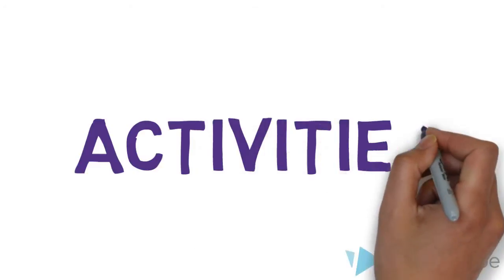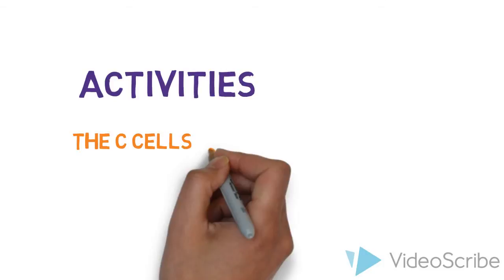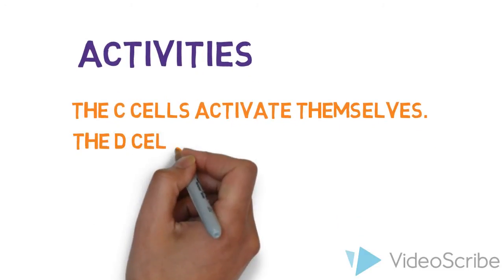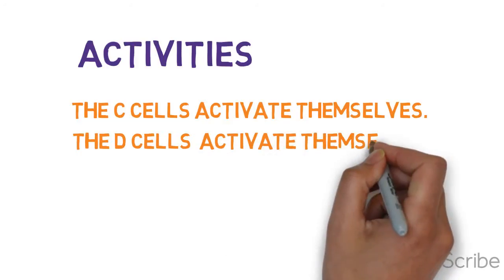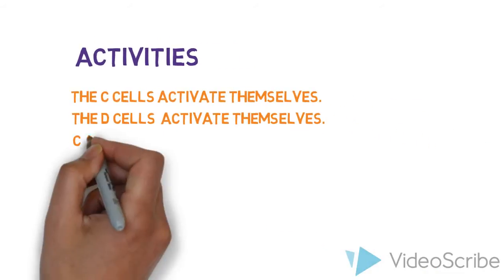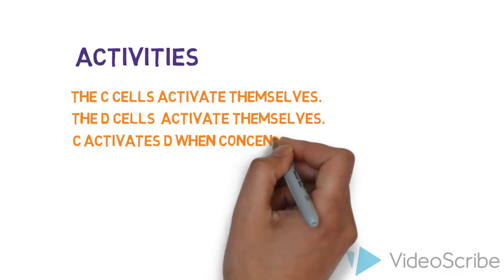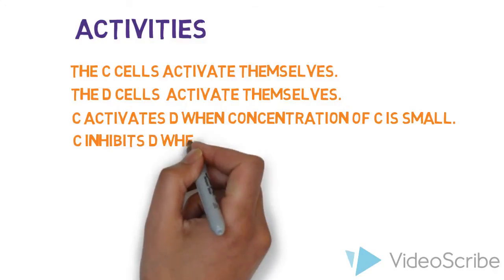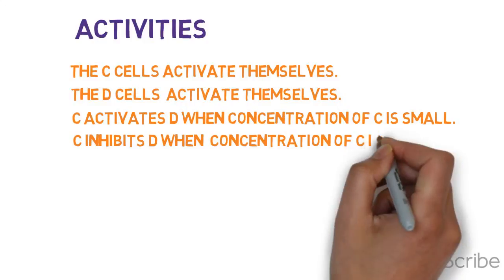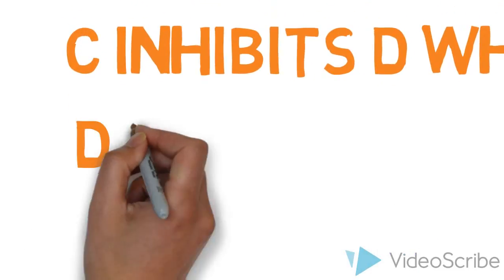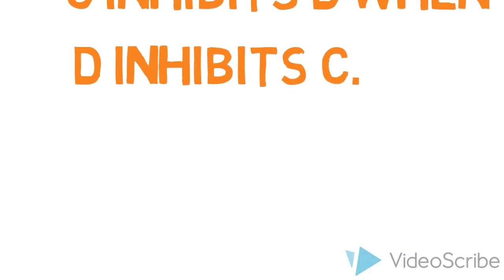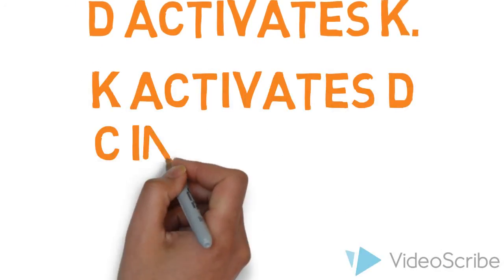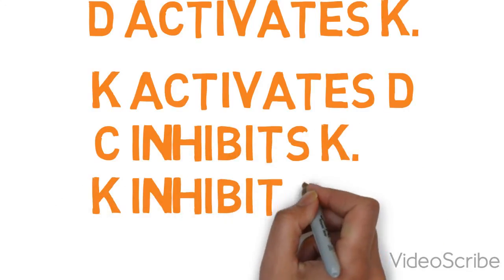According to previous figure, we can conclude that the C cells activate themselves and the D cells activate themselves also. And the C activates D when concentration of C is small. And the C inhibits D when concentration of C cells is larger. And the D inhibits C, D activates K, K activates D and the C inhibits K and the K inhibits C.